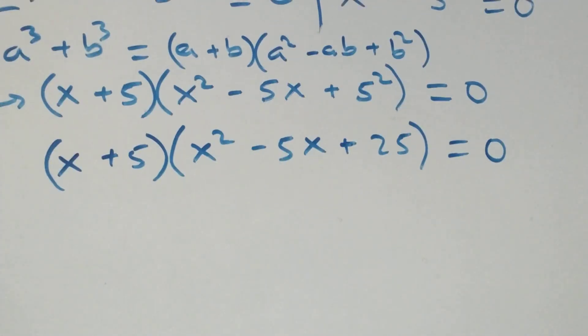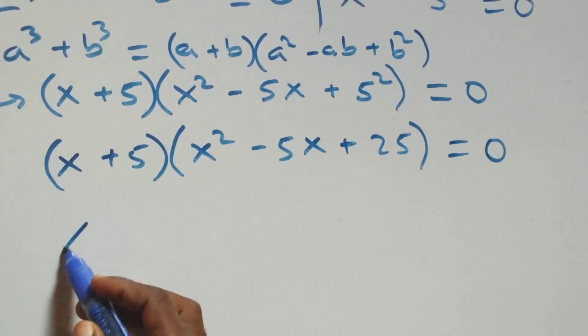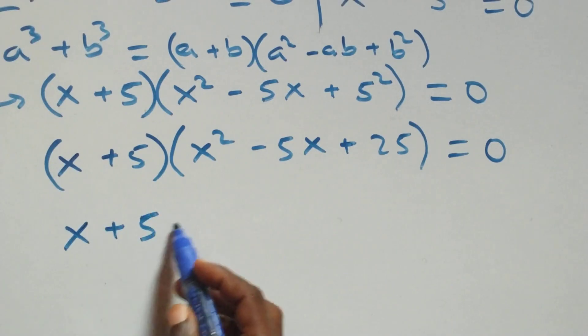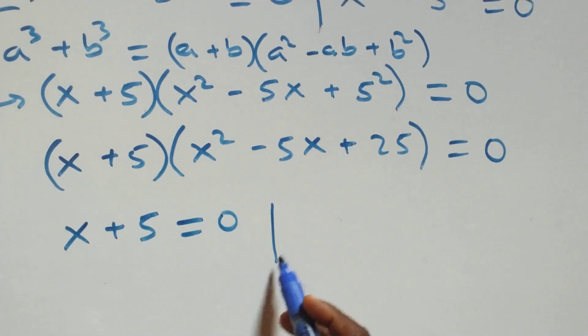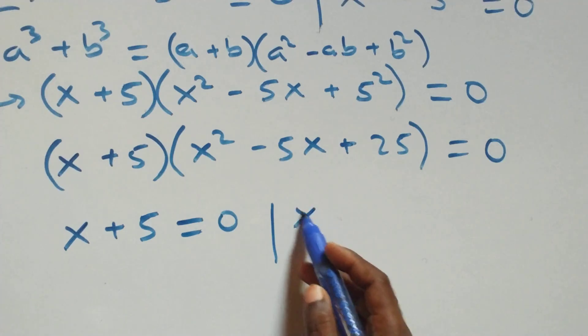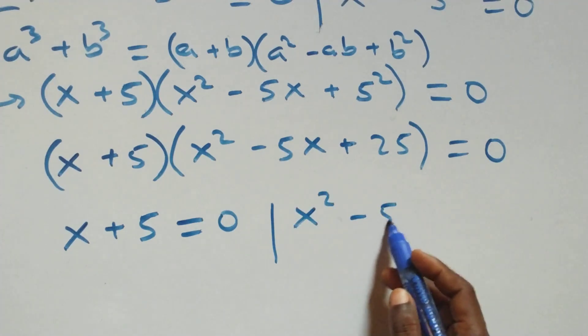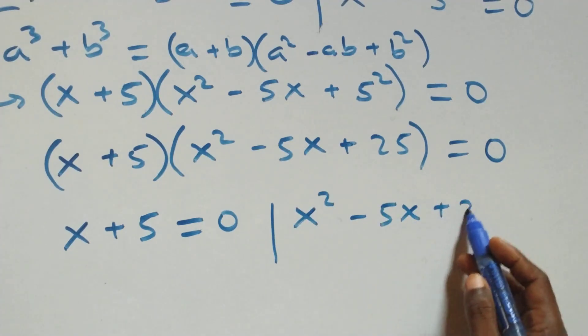We have two possible sub-cases here. The first one: x plus 5 equals to 0, or we have x squared minus 5x plus 25 equals to 0.